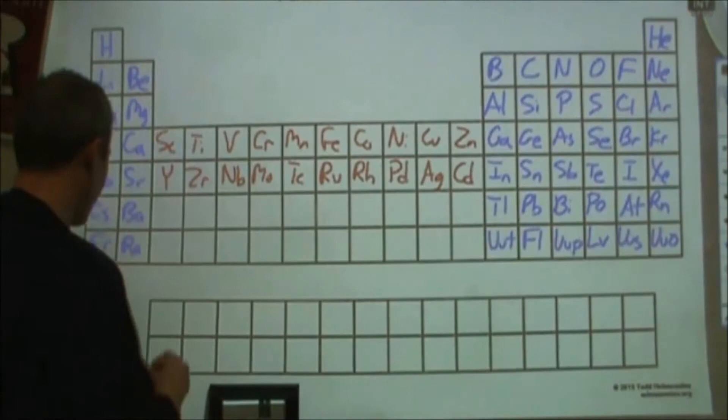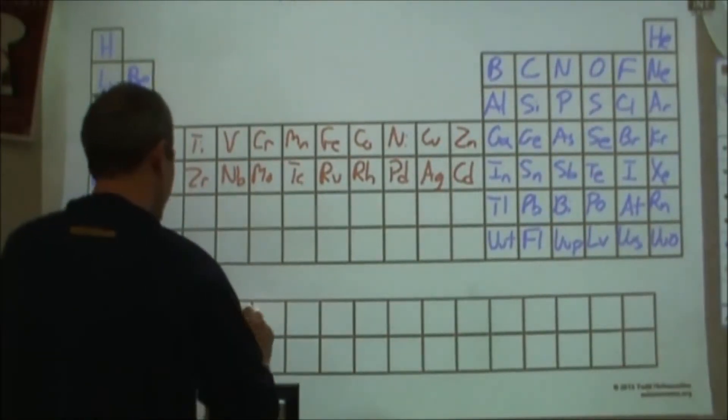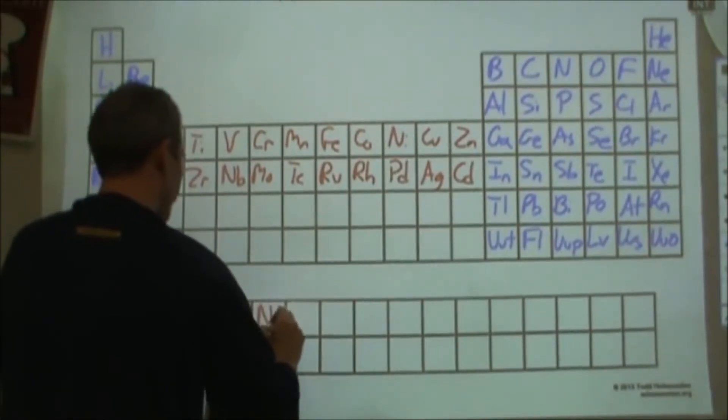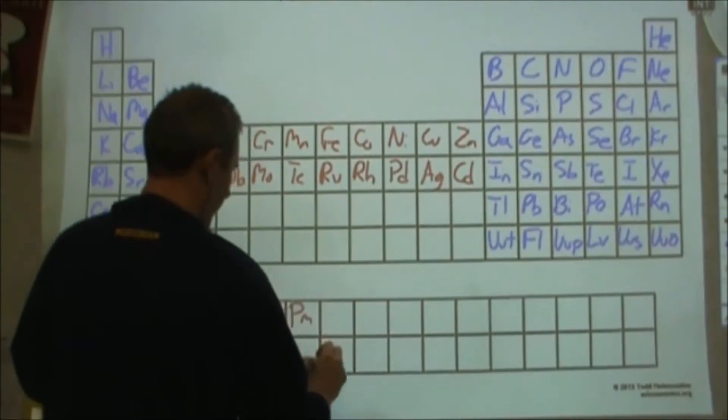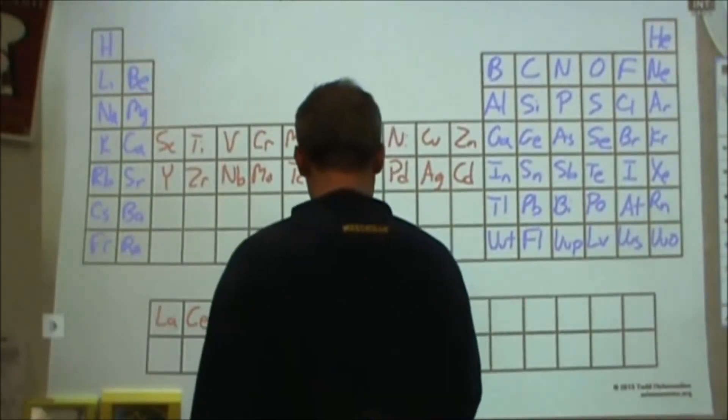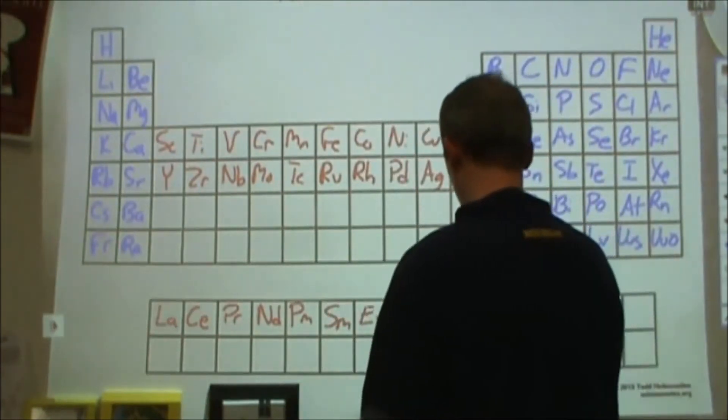So after barium we're going to skip down to the lanthanides. So lanthanum, cerium, praseodymium, neodymium, and then we have promethium, followed by samarium, europium, gadolinium.